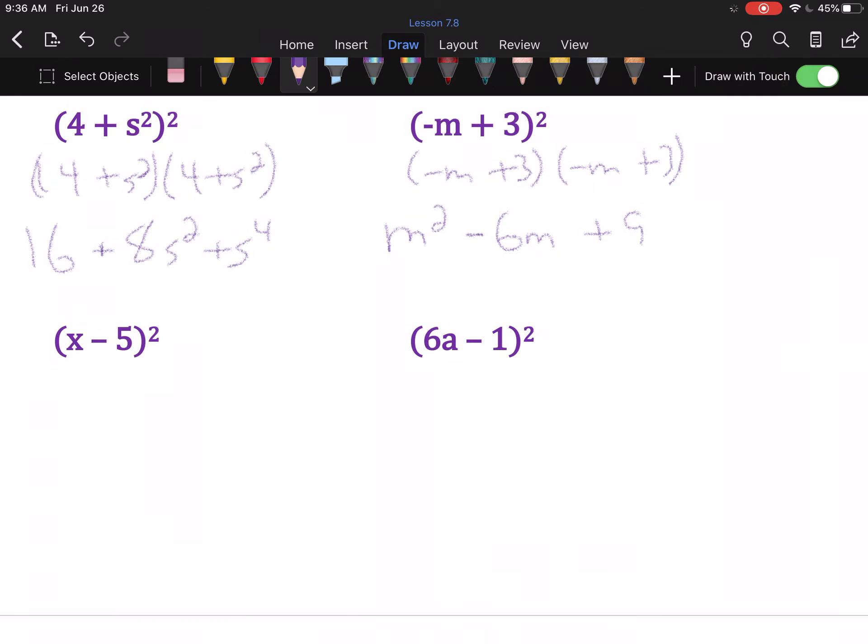Whenever it's binomial squared, it's not meant to be that difficult. First, x times x is x². Outer and inner will both be -5x. So, that's -10x when combined. Last, -5 times -5 is positive 25.